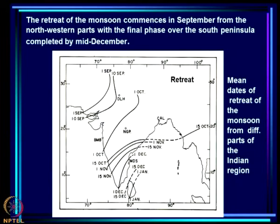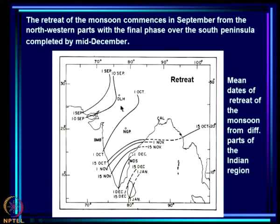The retreat of the monsoon commences around 1st September from the north-western parts and keeps retreating; the final phase over the southern peninsula is completed by December. By end of September it has retreated from a very large part of the monsoon zone, and by 15th October it has retreated from north of about 15°N. From the Gangetic plain and monsoon zone it comes well to the south, and the rainy season continues with the final retreat of monsoon rains from the Indian region only in December.